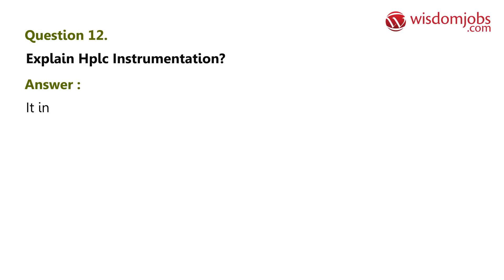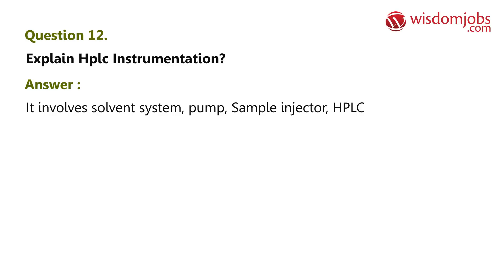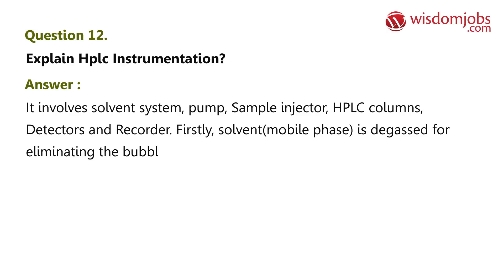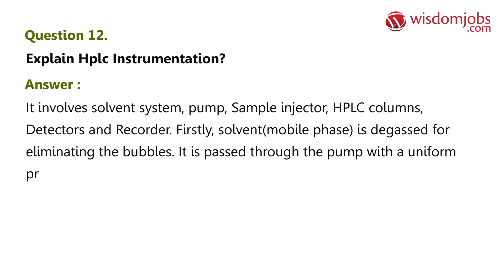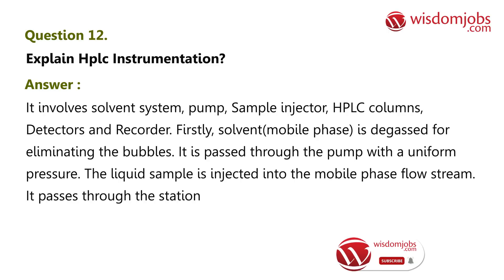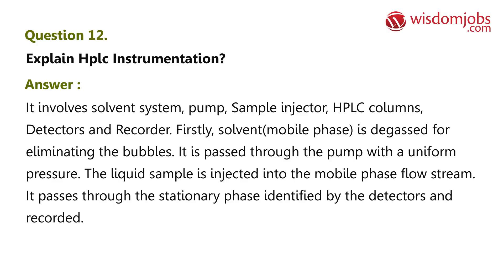Question 12: Explain HPLC instrumentation. Answer: It involves a solvent system, pump, sample injector, HPLC columns, detectors, and recorder. The solvent (mobile phase) is degassed to eliminate bubbles, then passed through the pump with uniform pressure. The liquid sample is injected into the mobile phase flow stream, passes through the stationary phase, is identified by the detectors, and recorded.